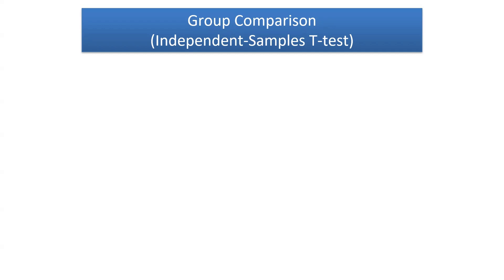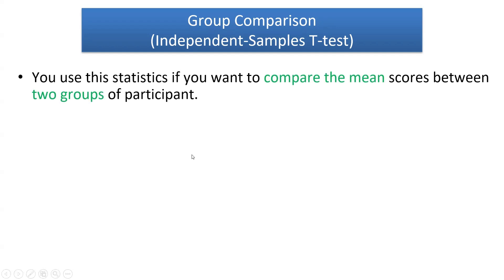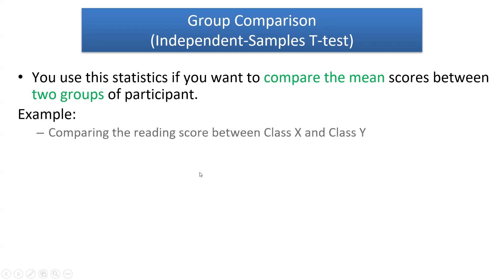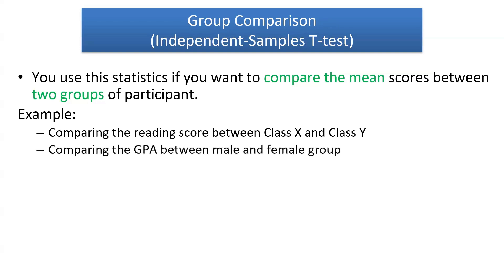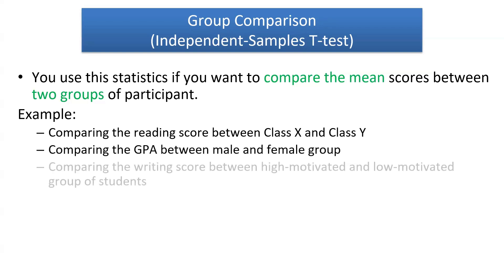In this occasion I'm going to explain a little bit about group comparison tests, and the statistic we are going to use is the independent sample t-test. You use this statistic if you want to compare the mean scores between two groups of participants. For example: comparing reading scores between class X and class Y, comparing GPA between male and female groups, or comparing writing scores between high-motivated and low-motivated students.